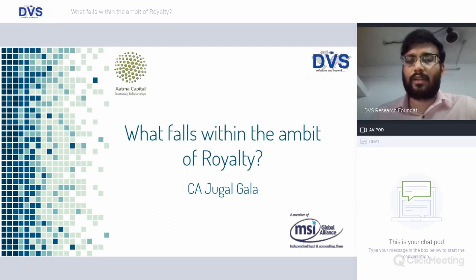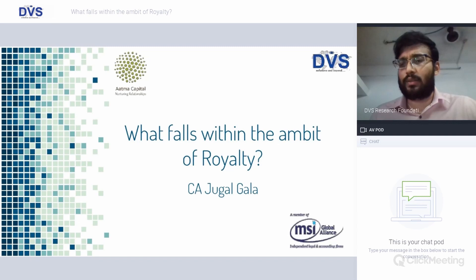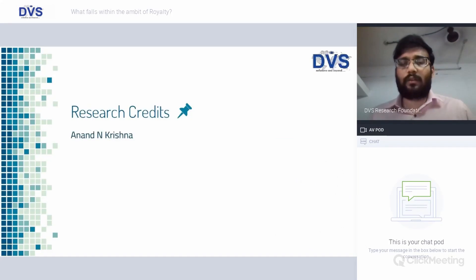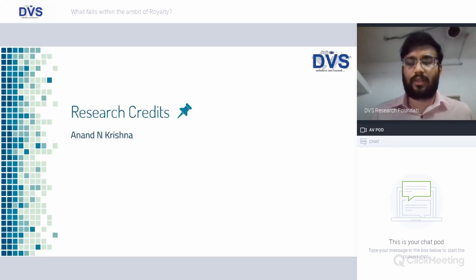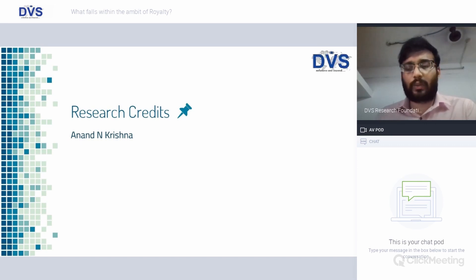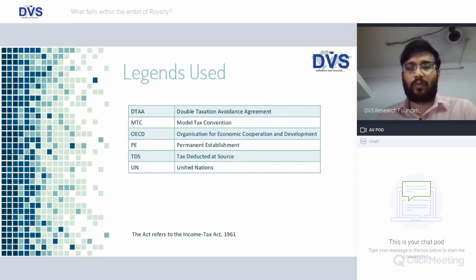Today we'll focus on the royalty part — what comes within the ambit of royalty, what falls within the definition, and a few judicial precedents to understand more as to what constitutes royalty. We'll also provide some examples, illustrations, and illustrative cases to confirm whether a transaction or component is royalty or not. Before starting, I'd like to acknowledge the effort of Anand for preparing this PPT.